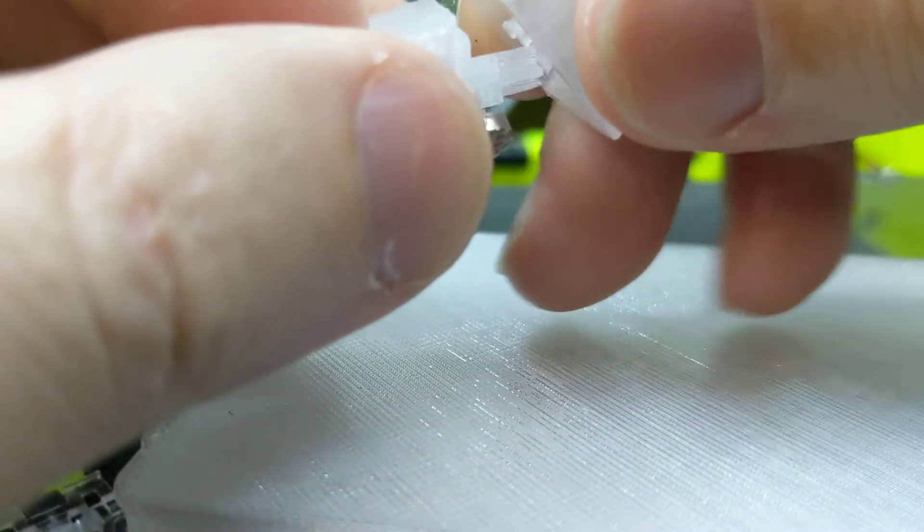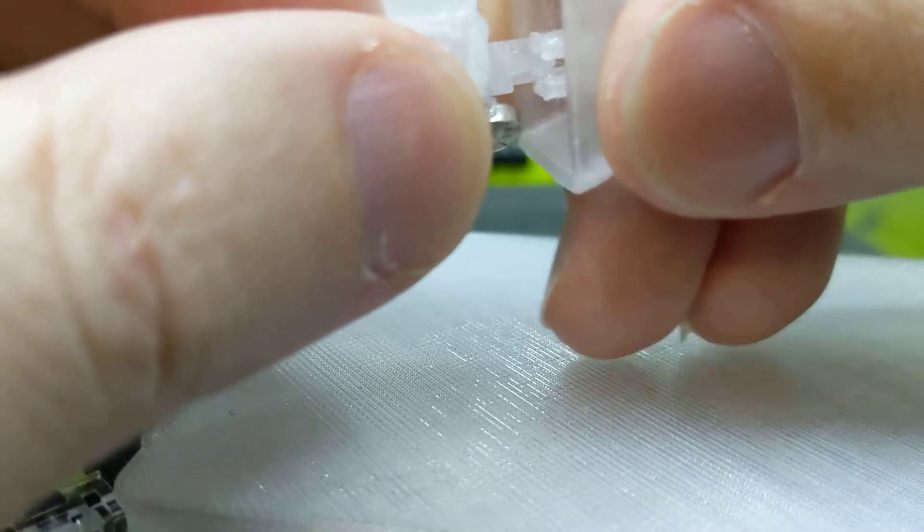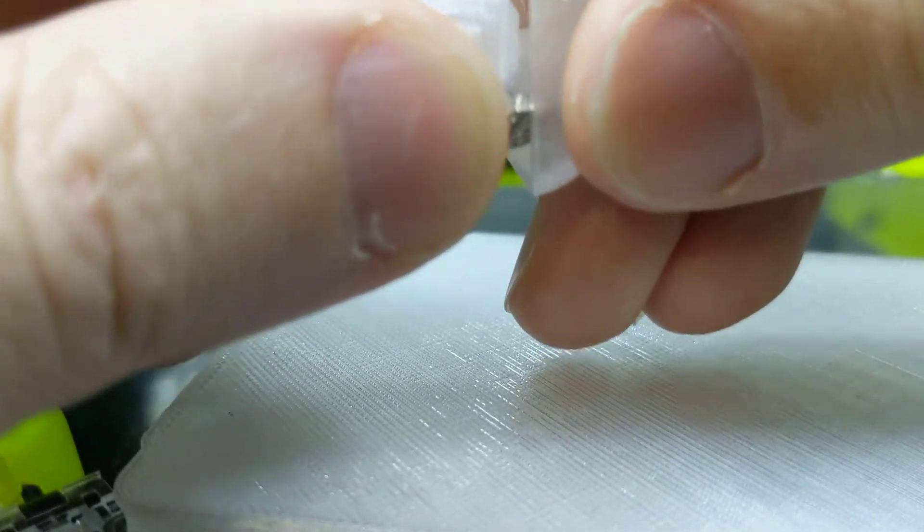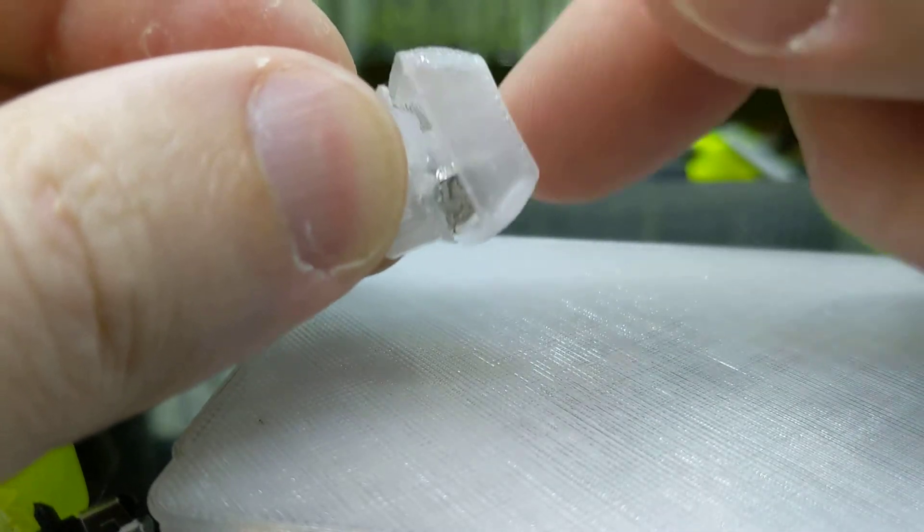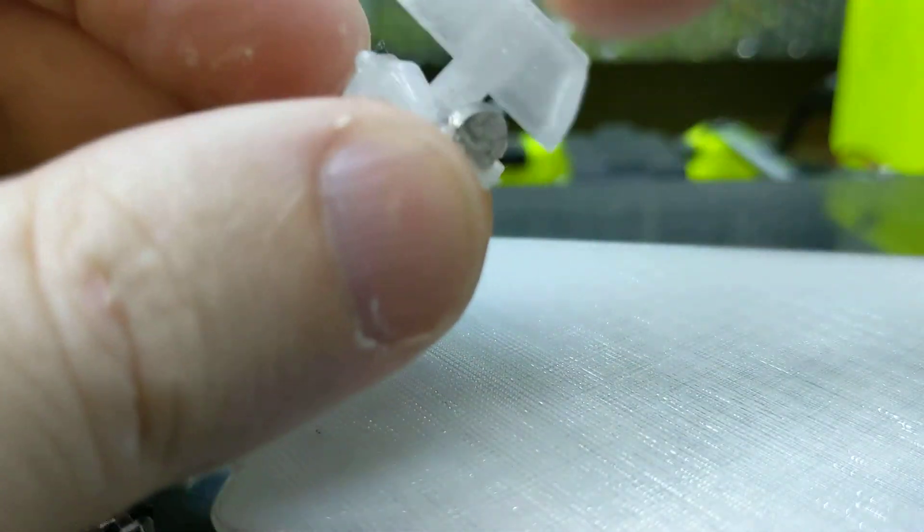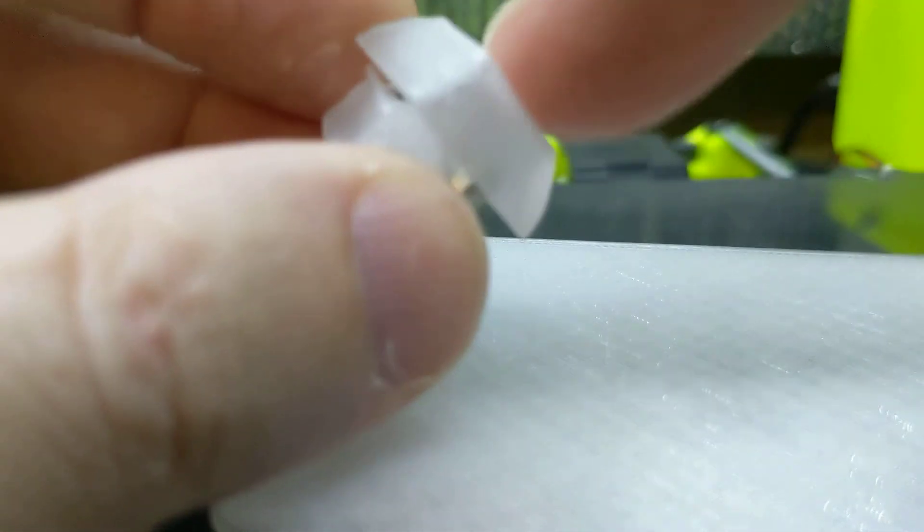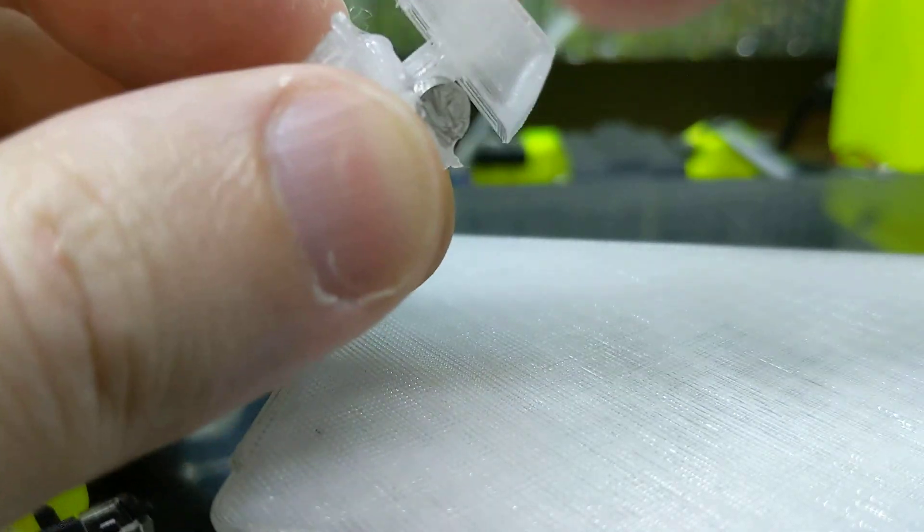I should probably make one with CA glue just to compare. The only annoying thing about CA glue is you can't pull it off after like it's permanent. I have to dip it in some acetone, get the CA glue off. Whereas with the silicone, I can just scrape it off on my fingernail and then use the magnet somewhere else.